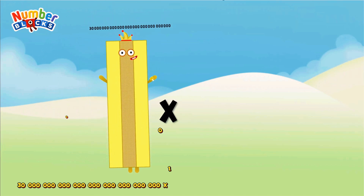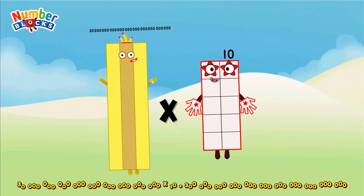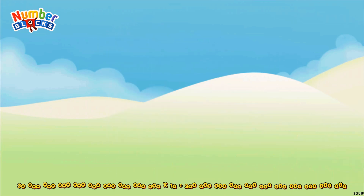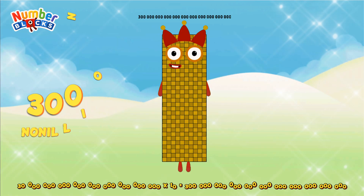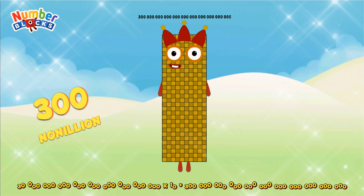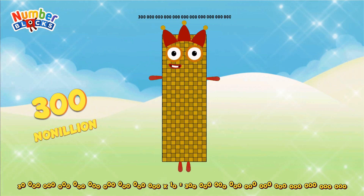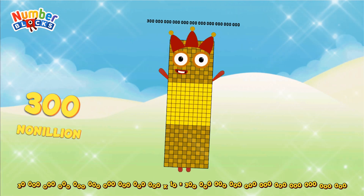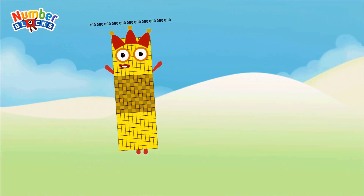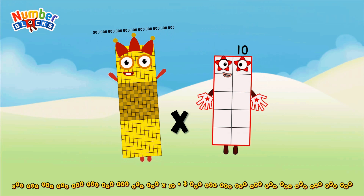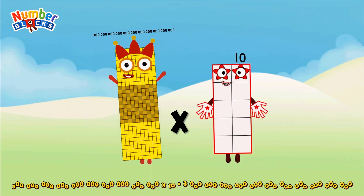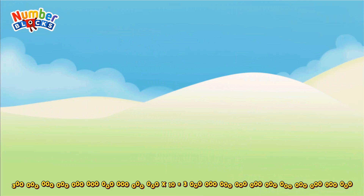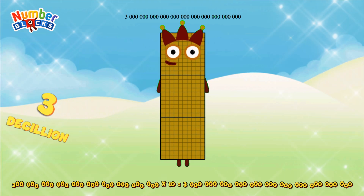30 Nonillion multiplicated by 10 equals 300 Nonillion. 300 Nonillion multiplicated by 10 equals 3 Decillion.